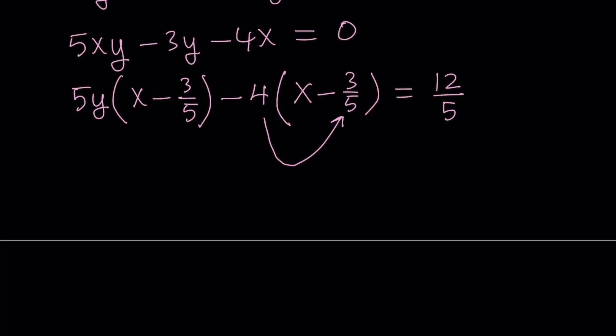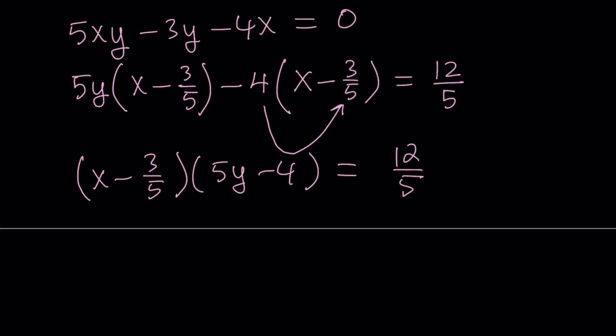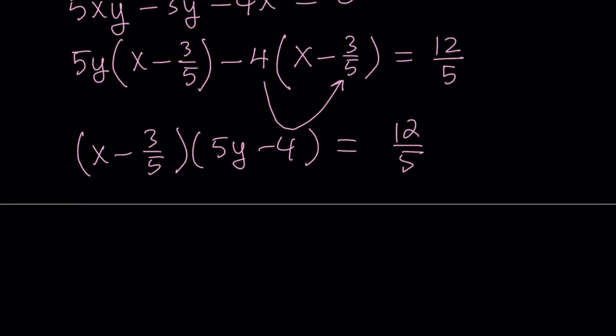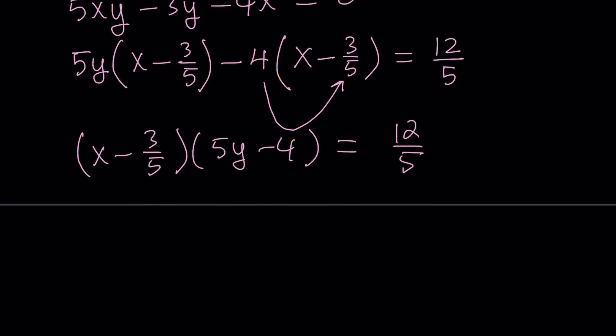Now, we are ready to factor. We can take out x minus 3 over 5, which is a common factor. The other factor is going to be 5y minus 4. Now, I have a fraction on both sides, so let's go ahead and multiply both sides by 5. And it's going to give us 5x minus 3 multiplied by 5y minus 4 equals 12. Awesome.